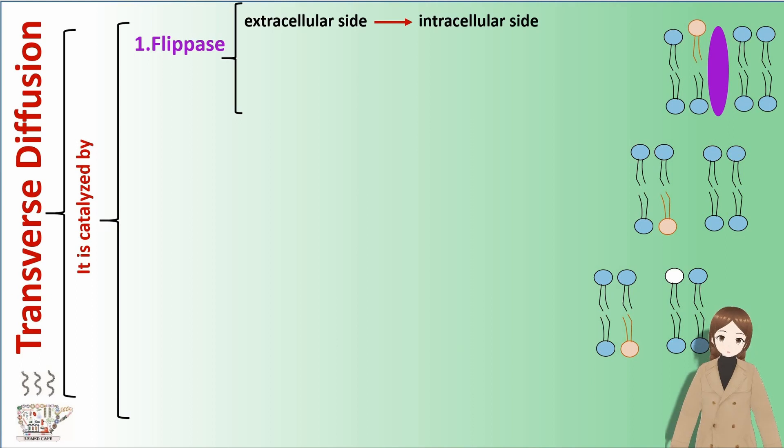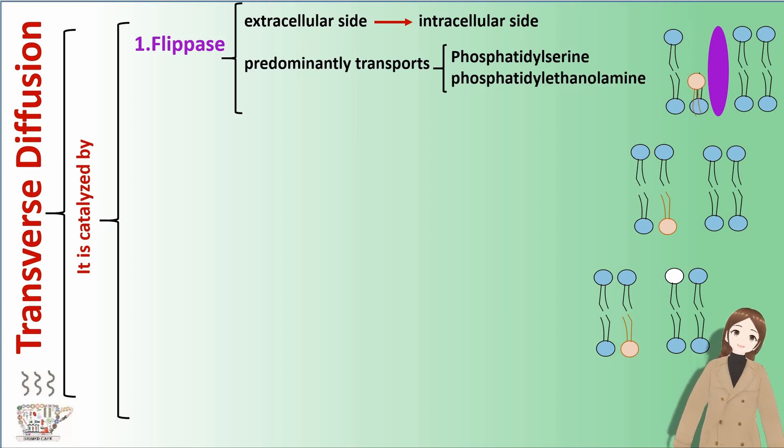Flippase moves phospholipid from extracellular side to intracellular side. It predominantly transports phosphatidylserine, and it's an ATP-independent process.